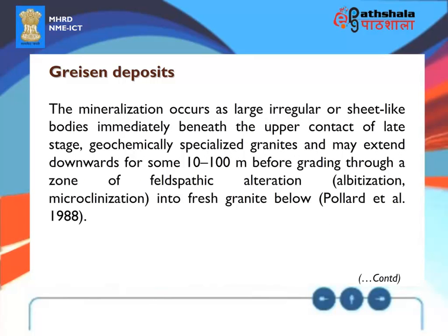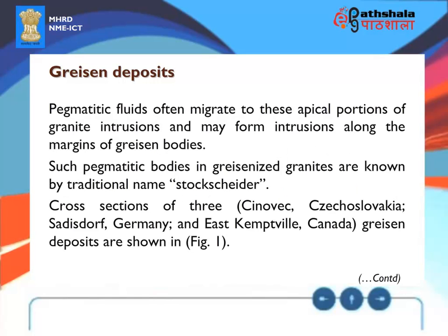The mineralization occurs as large, irregular or sheet-like bodies immediately beneath the upper contact of late-stage, geochemically specialized granites, and may extend downwards for some 10 to 100 meters before grading through a zone of feldspathic alteration — albitization, microclinization — into fresh granite below (Pollard et al., 1988). Pegmatitic fluids often migrate to these apical portions of granite intrusions and may form intrusions along the margins of greisen bodies. Such pegmatitic bodies in greisenized granites are known by the traditional name Stockscheider.